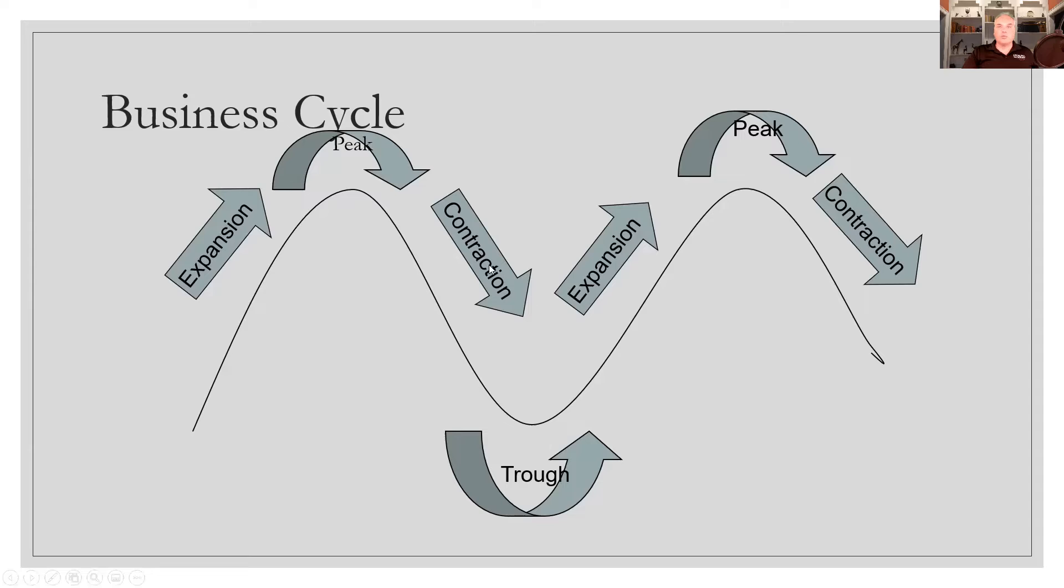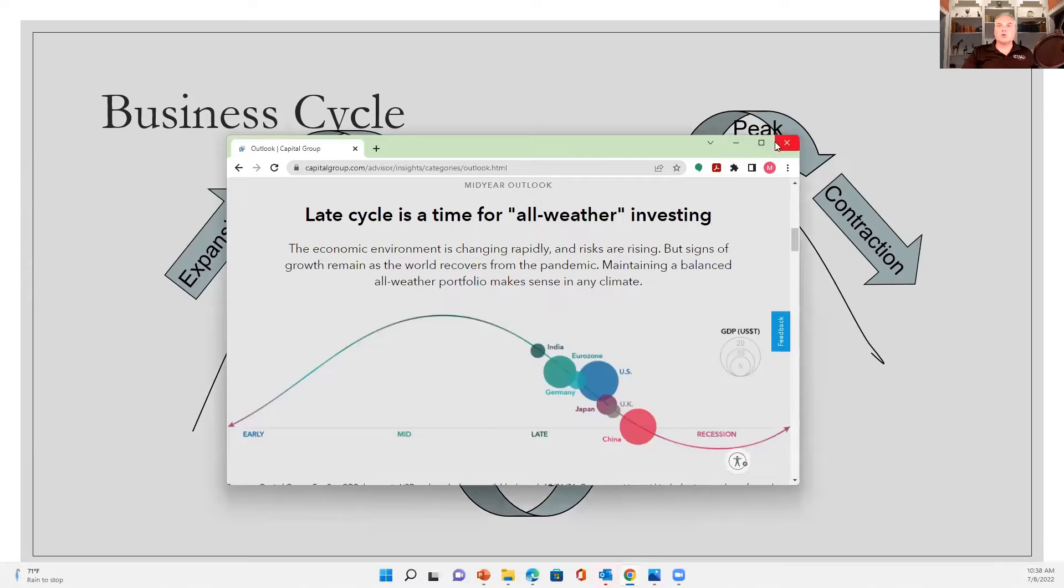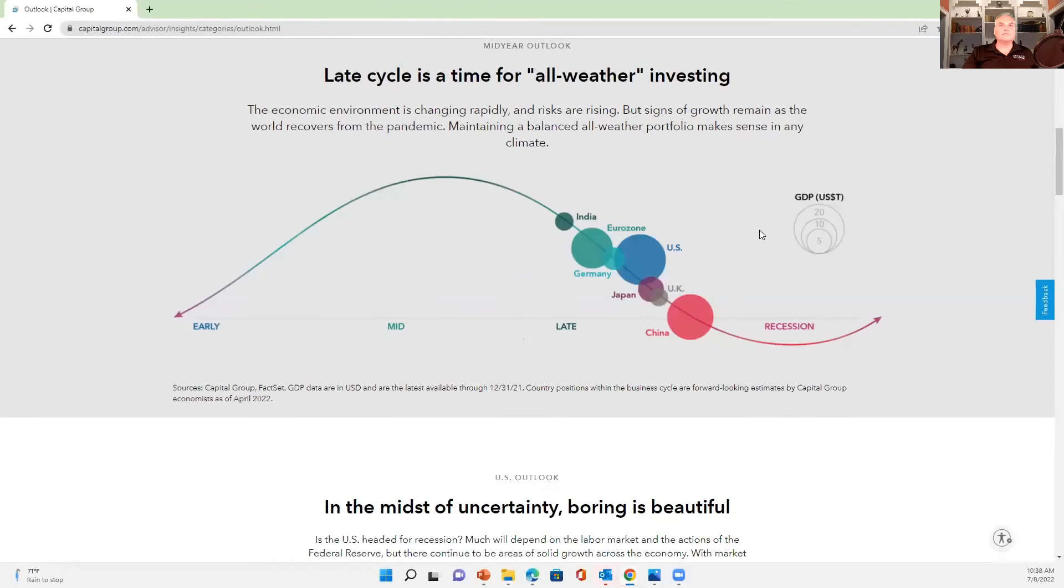And then typically we would shift into an expansion, go through a peak, go through another contraction. And this cycle continues on and on. Based on our current economic system and probably even ones before us, it's just sort of a natural way of the world working.